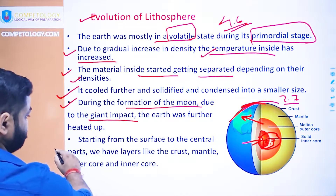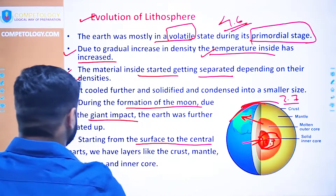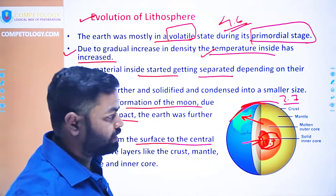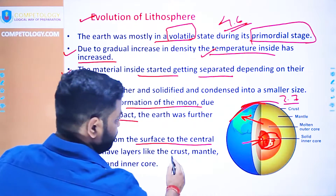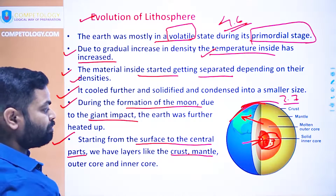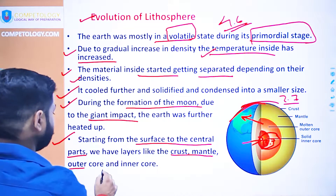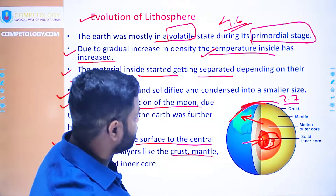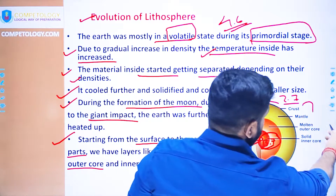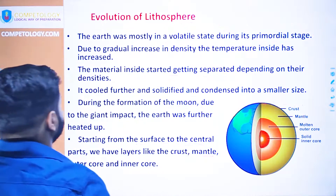From the surface of the earth to the central part, there is a layered structure. Starting from the top, the layers are: the crust, then the mantle, then the outer core, and the inner core, as we can see in the diagram.